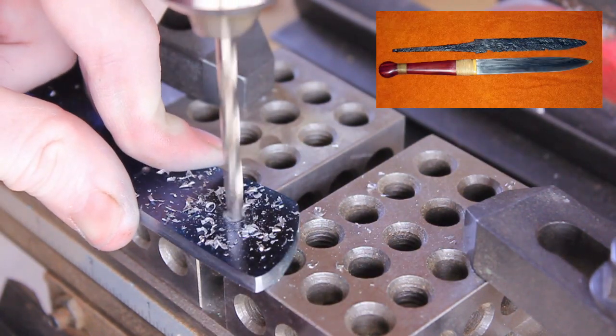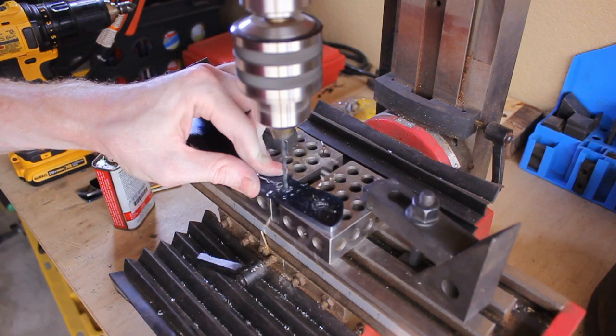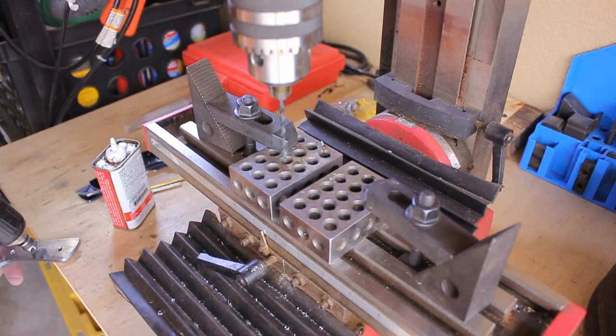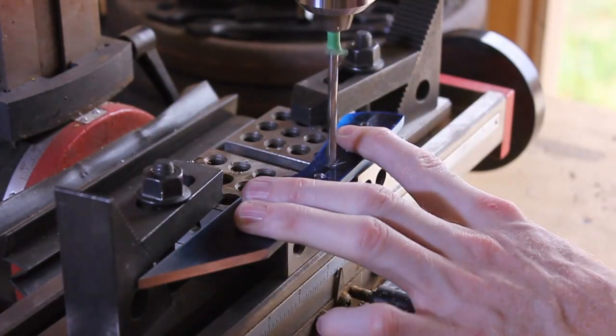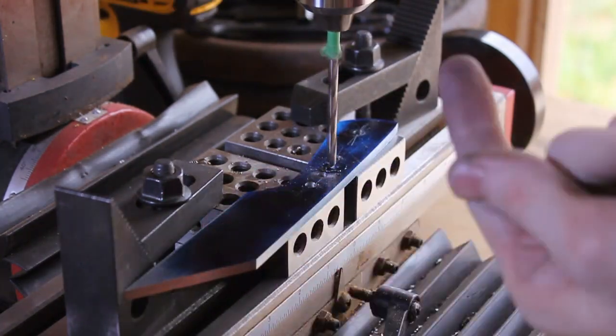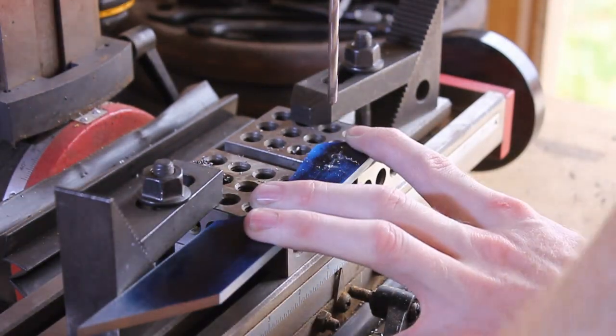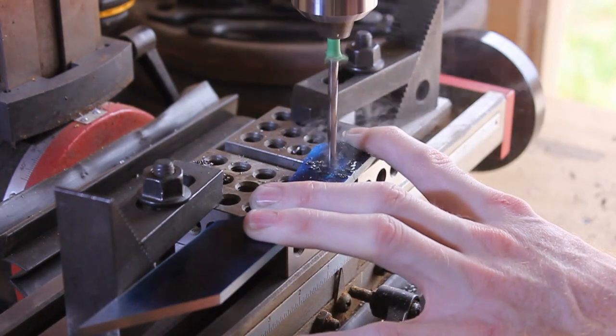One of the major differences is that it seems like the saxes didn't have a guard. They had a very straight handle. We're adding a little bit of a twist here. This is going to be an everyday carry style sax, so I have a little bit of curvature in the handle.